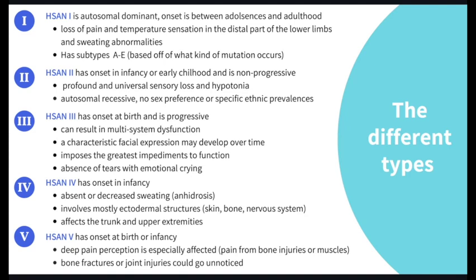HSAN 4 has onset in infancy with absent or decreased sweating. It involves mostly ectodermal structures such as skin, bone, and nervous system, and affects the trunk and upper extremities. HSAN 5 also has onset at birth or infancy. Deep pain perception is especially affected, including pain from bone injuries or muscles, and bone fractures or joint injuries could go unnoticed.